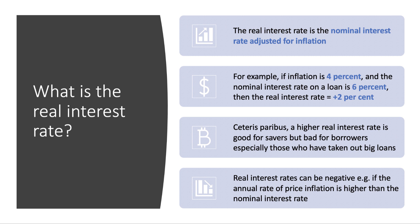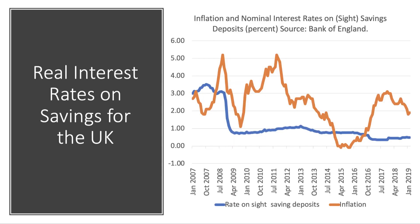Crucially, real interest rates can be negative if the annual rate of inflation is greater than the nominal rate of interest on savings and loans. This chart shows the rate of inflation in orange for the UK from 2007 through to the spring of 2019. The source of the data is the Bank of England. The blue line shows the average rate of interest on sight deposits — things like money in a current account where you've got a debit card and can take out money immediately without loss of interest.